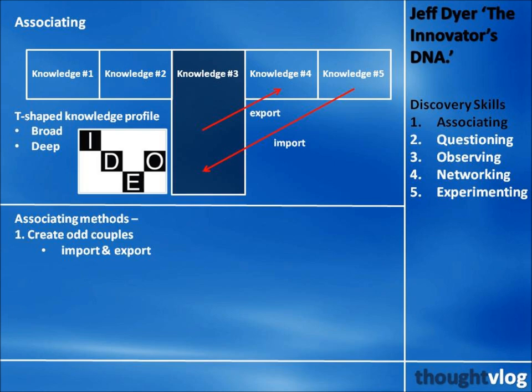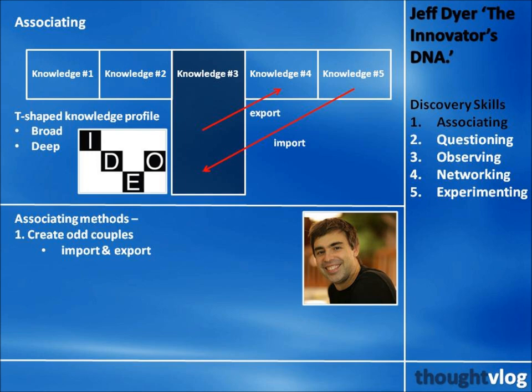This allows the creation of odd couples — an associating method that helps in the creation of new ideas. Often this will involve exporting ideas or practices from your area of expertise to another area, or importing a concept from another area to your deep knowledge area. For example, Google's Larry Page brought together the odd couple of web search and academic citations, which involve ranking papers on the basis of the number of other papers linked to it.